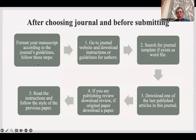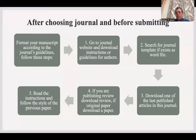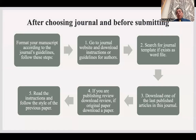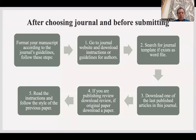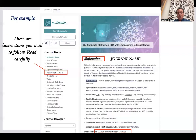How do you do that? Before your submission, after you choose the journal, number one: go to the journal website and download instructions or guidelines for authors. Search for the journal template — if it exists, download the Word file, as this will make it much easier. If you are publishing a review, download an example of a review; if you are publishing a research paper, download an example of a research paper.